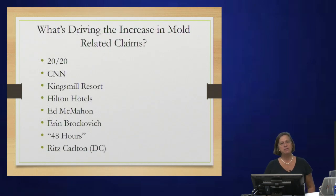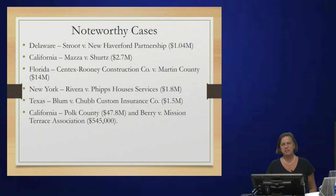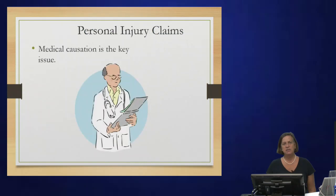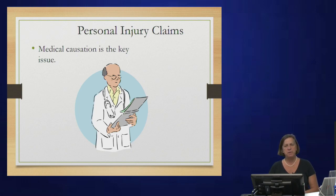Here are some of the drivers of mold litigation. 20/20 had a story on it. CNN covered it. Kings Mill Resort here in Virginia closed about 400 units because of mold remediation. Hilton Hotels closed a hotel in Hawaii to remediate mold. Some high-profile people have brought mold cases, and there are some significant judgments that have been recovered. As for personal injury claims — you can recover for property damage, but personal injury is more difficult because you have to prove medical causation, and there really is not a set dose-response to mold.